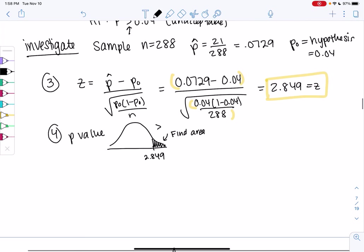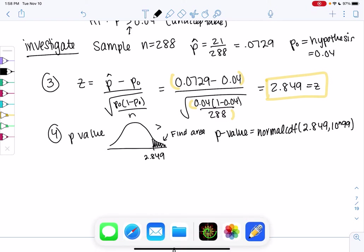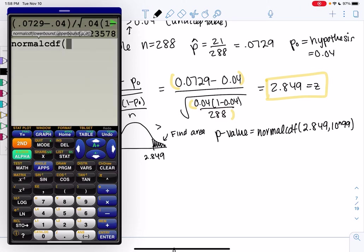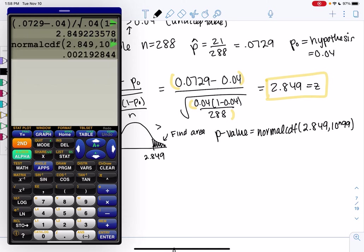The P-value is the area. That's normal CDF for area. Lower is 2.849, up to infinity is my upper, or 10 to the 99. Second distribution, go down to normal CDF, 2.849, comma, 10 to the 99. And we get this small decimal, 0.0022.